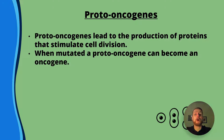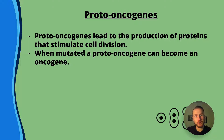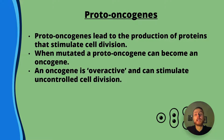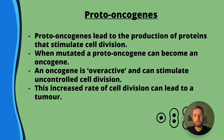When mutated, a proto-oncogene can become what's called an oncogene — and that's where the oncology departments of cancer hospitals get their name. An oncogene is overactive and can stimulate cell division when it's not needed, healthy, or appropriate. This increased rate of cell division can lead to a tumour, which is an unspecialized, undifferentiated mass of cells that can be harmful.